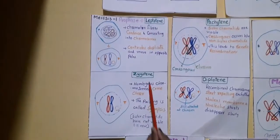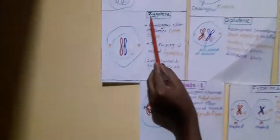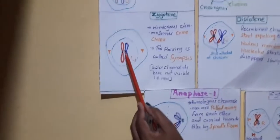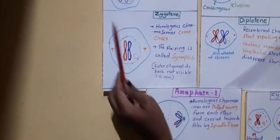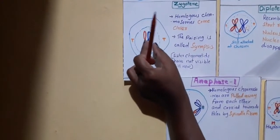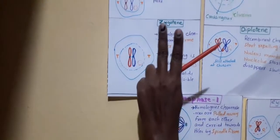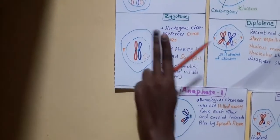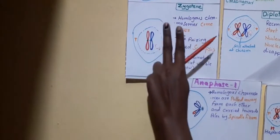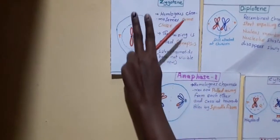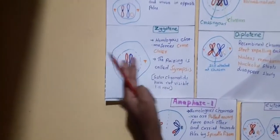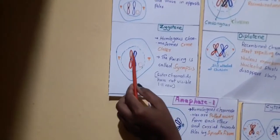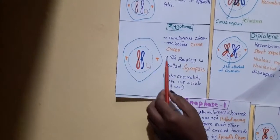The next sub-phase is Zygotene. In the zygotene stage, homologous chromosomes come closer and form into a pair — they are not in direct contact, but they make a pair. The pairing of homologous chromosomes is called synapsis. Sister chromatids are not visible yet in this stage.